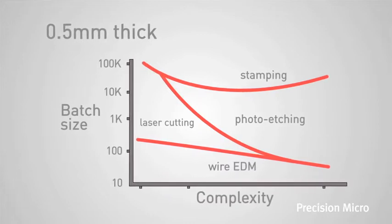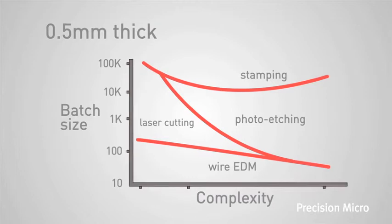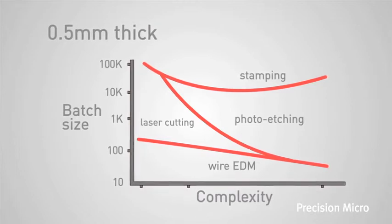If you only want to make one or two prototypes then perhaps you might use wire electrode discharge machining, and in between those extremes there is a battle between photo etching and laser cutting.